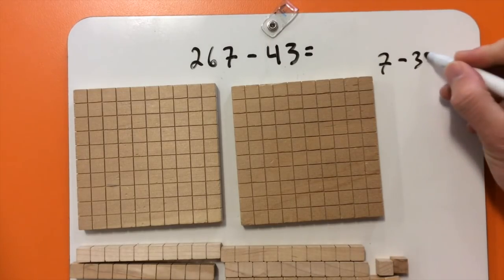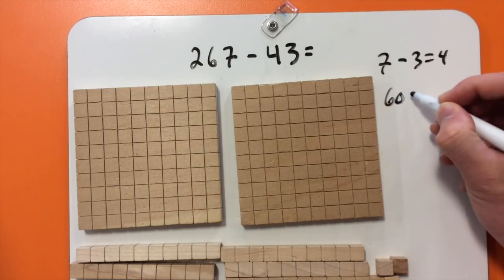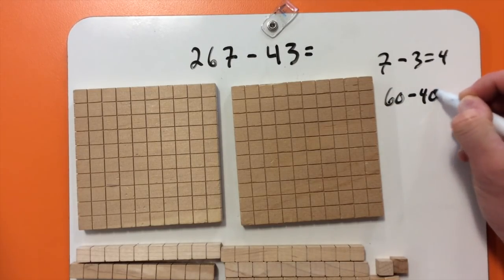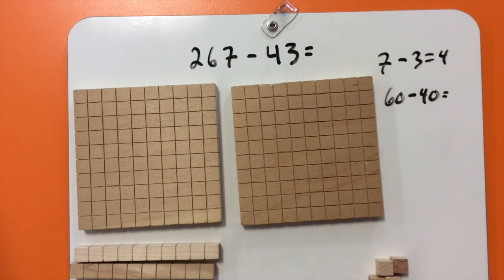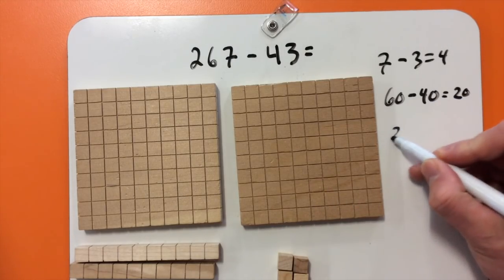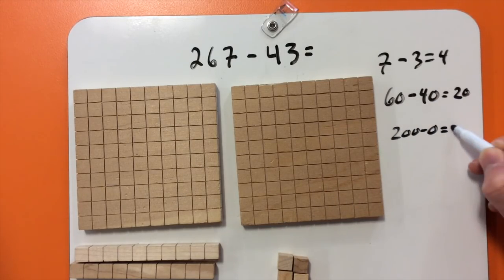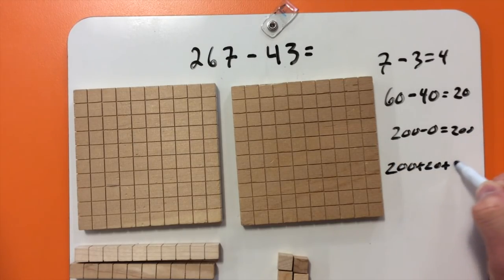I'm going to take away first the ones. So 7 take away 3. And I've got 7 there and that is 4. Then 6 tens, so that's 60, take away 4 tens, which is 40, and that equals 20, 2 tens. And I've still got all my hundreds. So 200 take away 0 equals 200. So my answer is going to be 200 plus 20 plus 4 equals 224.